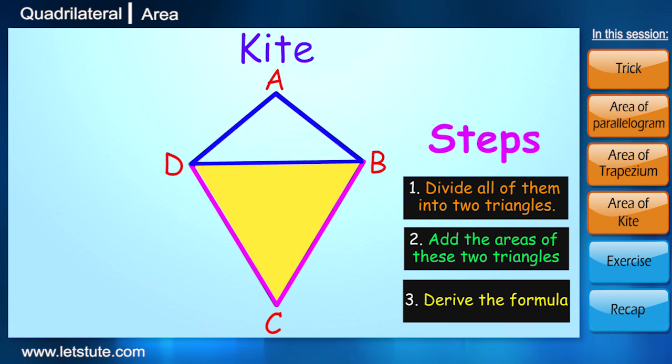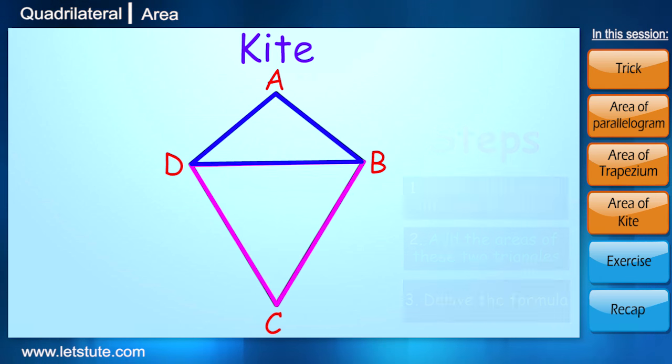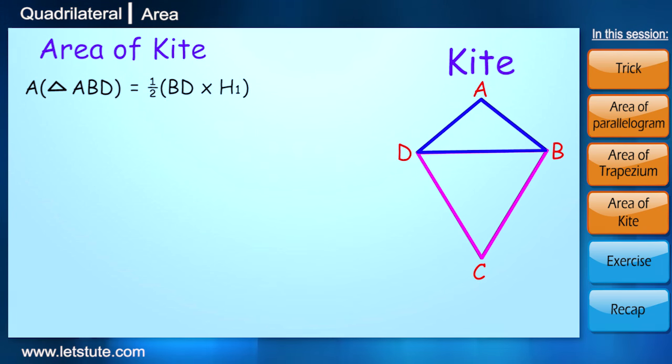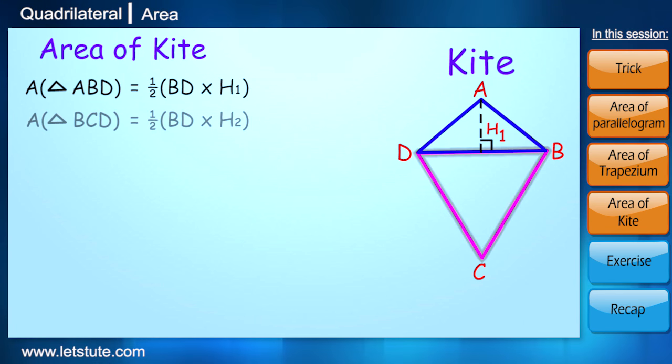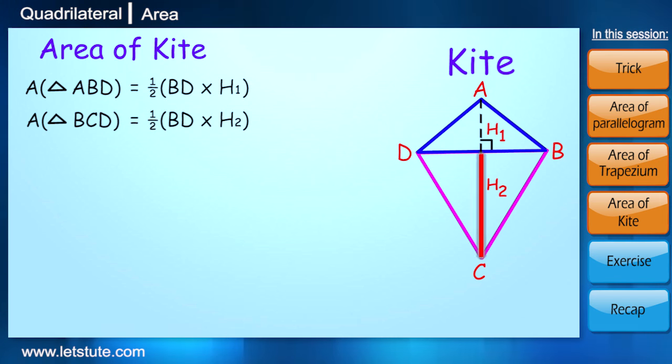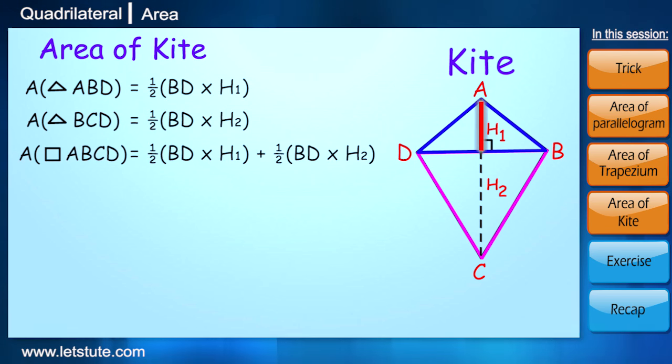Area of triangle ABD is half times BD into h1, where BD is base and h1 is height for triangle ABD. Now similarly for triangle BCD, it will be half times again BD is the base, and here height will be h2. Height for these two triangles are unequal, therefore we have taken the notations as h1 and h2.